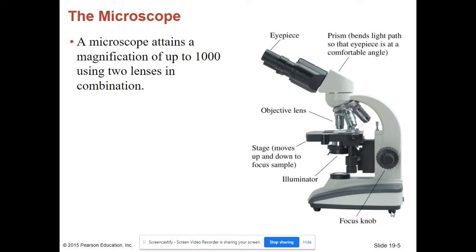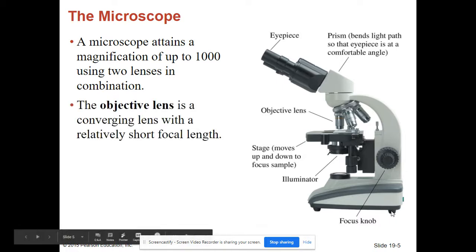A microscope attains a magnification of up to 1,000 using two lenses in combination. The objective lens is a converging lens with a relatively short focal length.